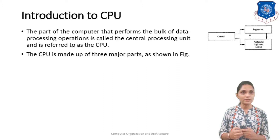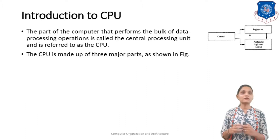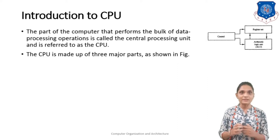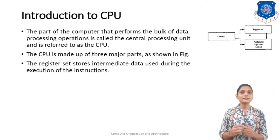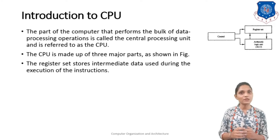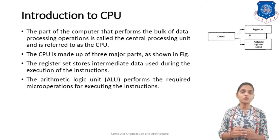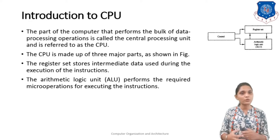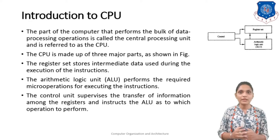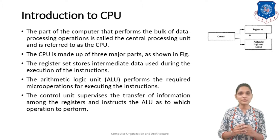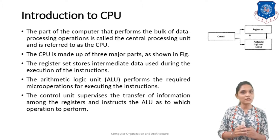As shown in this figure, the CPU mainly contains three parts: Control, Register Set, and ALU. The register set stores the intermediate data used during the execution of instructions. The ALU performs arithmetic and logical micro-operations required by instructions. The control unit supervises the transfer of information among the registers and tells the ALU which operation to perform.